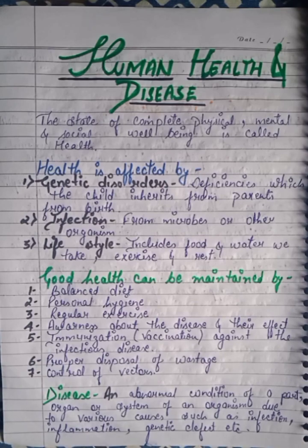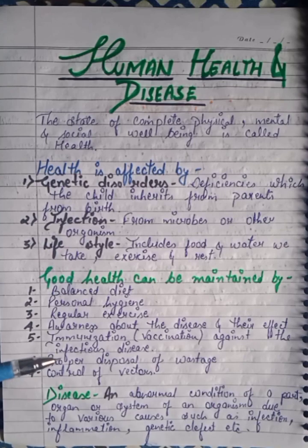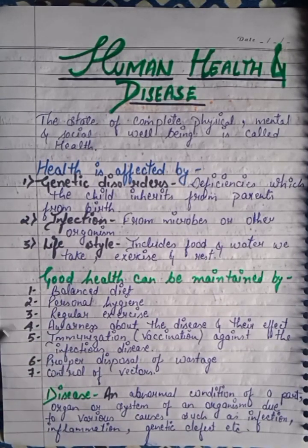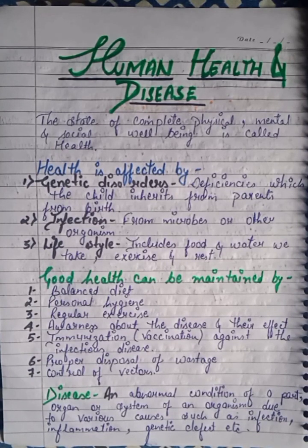Disease is an abnormal condition of a body part, organ, or system of an organism due to various causes such as infection, inflammation, genetic defect, etc. This abnormal condition can be due to infection or inflammation or genetic defect — this is what we call a disease.